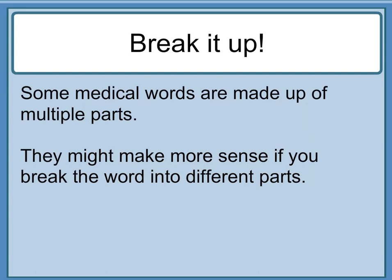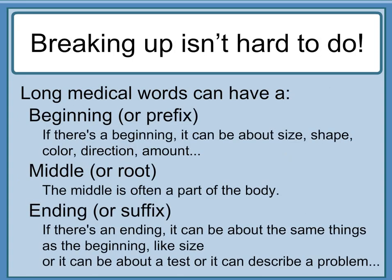Some medical words are made of multiple parts. They might make more sense if you break the word into different parts. Long medical words can have a beginning or prefix — if there's a beginning it can be about size, shape, color, direction, or amount. The middle or root is often a part of the body. If there's an ending or suffix, it can be about the same things as the beginning, like size, or it can be about a test, or it can describe a problem.